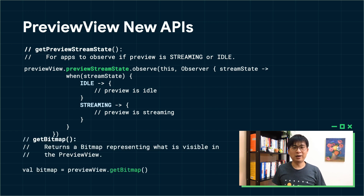Second, the GetBitmap API. This API allows the application to get a snapshot of the current preview displayed in PreviewView. Getting a bitmap is not as easy as it looks because, first, the underlying view could be a SurfaceView or a TextureView, which have different ways to get a bitmap. Second, the bitmap you get from the view is not properly transformed or cropped like PreviewView does. So the new GetBitmap API allows the application to get the bitmap 100% identical to what you see in PreviewView.